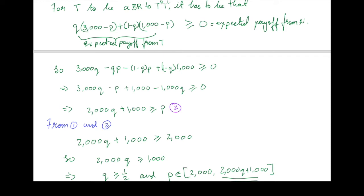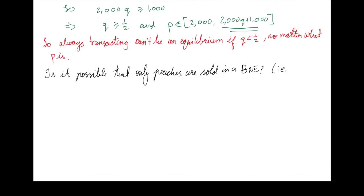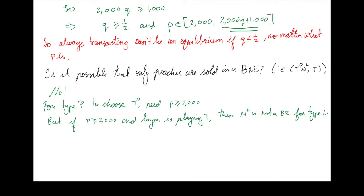However, if Q is less than 1/2 — if there's a big enough chance that the car is a lemon — then always transacting won't be an equilibrium, no matter what the price is. Can only peaches be sold? That can't be a Bayes-Nash equilibrium, because for the peach type seller to choose transact, the price must be at least $2,000. But if the price is at least $2,000 and the buyer is choosing to transact, then not transacting is not a best response for the lemon type. So there's no way for the peach type to separate itself from the lemon type: if the price is high enough to get the peach to sell, the lemon type will pretend to be the peach type.